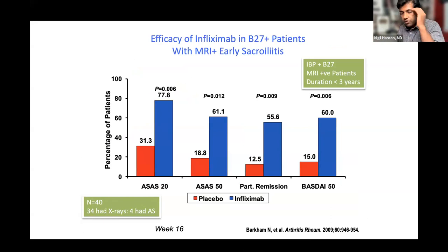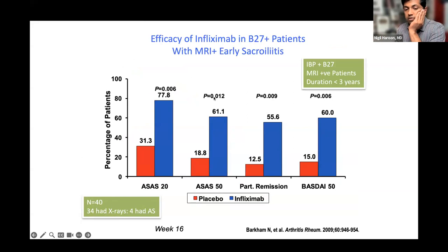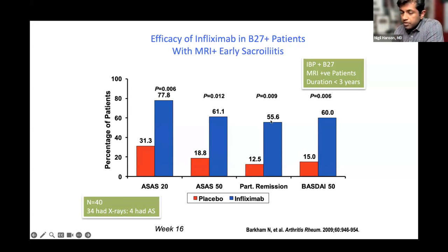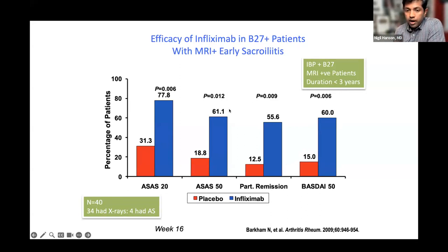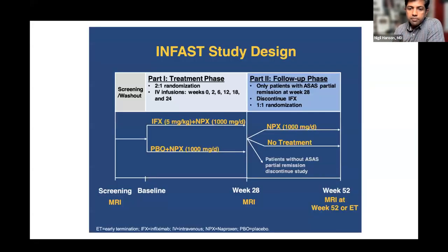Data on early treatment shows more than 60% ASAS-40 response and over 50% achieving partial remission — much higher than the typical numbers in established disease. The key difference is that these patients were treated within three years of symptom onset and had evidence of active inflammation. This demonstrates the window of opportunity: treating early dramatically improves both the number of patients responding and the depth of remission.